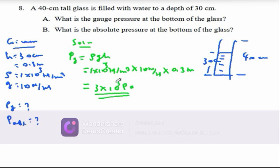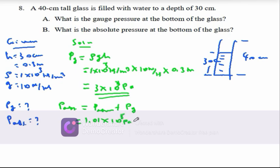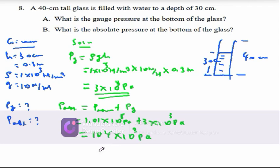So this is your final solution for gauge pressure. Then the absolute pressure is the sum of atmospheric pressure plus gauge pressure. Atmospheric pressure is 1.01×10⁵ pascals, plus gauge pressure of 3×10³ pascals. When you add these two quantities, you get 104×10³ pascals. So these are the two required values.